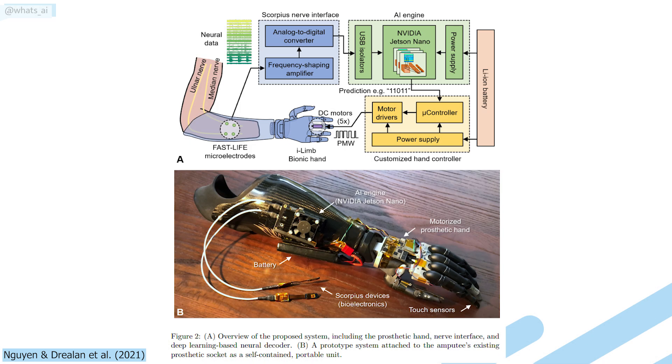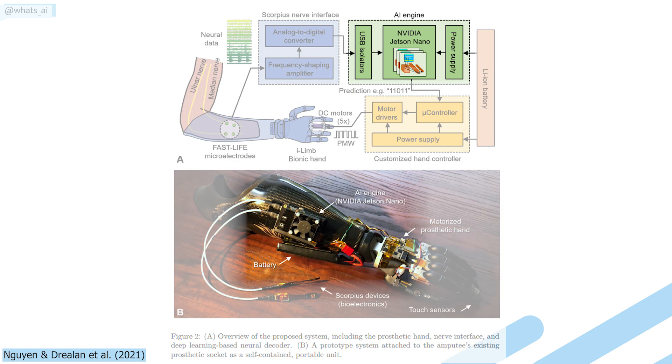Here, deep learning is used to process and decode nerve data acquired from the amputee to obtain dexterous finger movements. The problem here is that in order to be low latency, this deep learning model has to be on a portable device with much lower computational power than our GPUs.